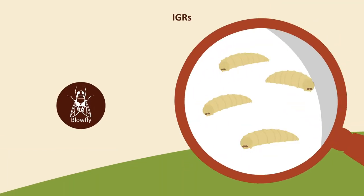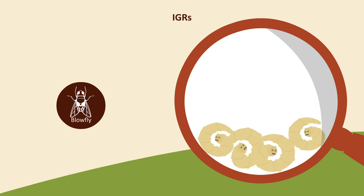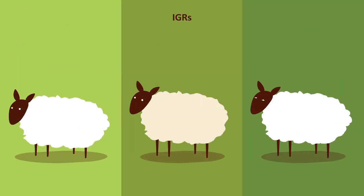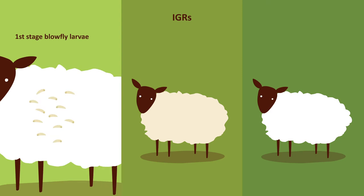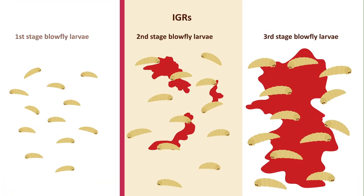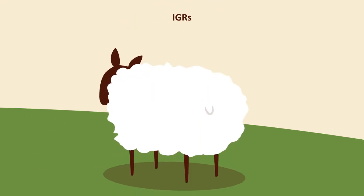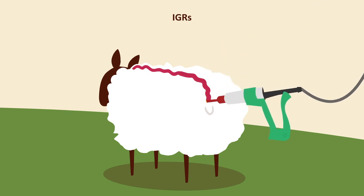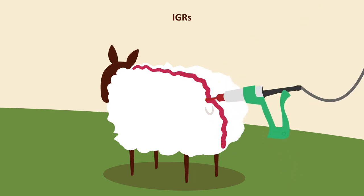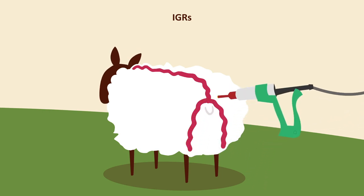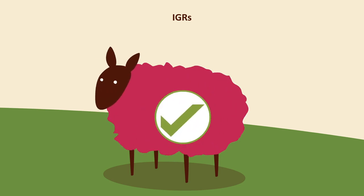IGRs are a targeted treatment to prevent blowfly strikes and provide the longest period of protection. Unlike the other treatments, they are not insecticidal. IGRs work by preventing the harmless first stage blowfly larvae developing into the more harmful second and third stages. IGRs should be applied using the four-stroke method: half the dose is applied to the back and half to the breech area, making sure that each stroke overlaps slightly. The product spreads by gravity before binding to the fleece.